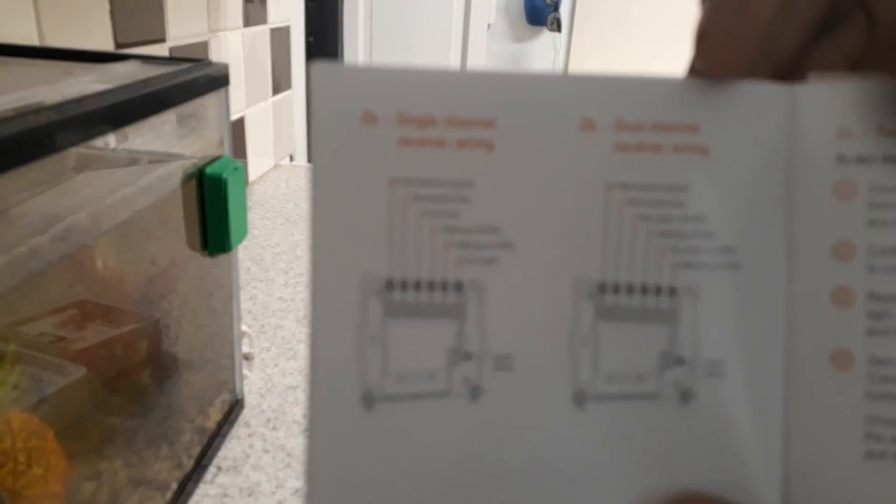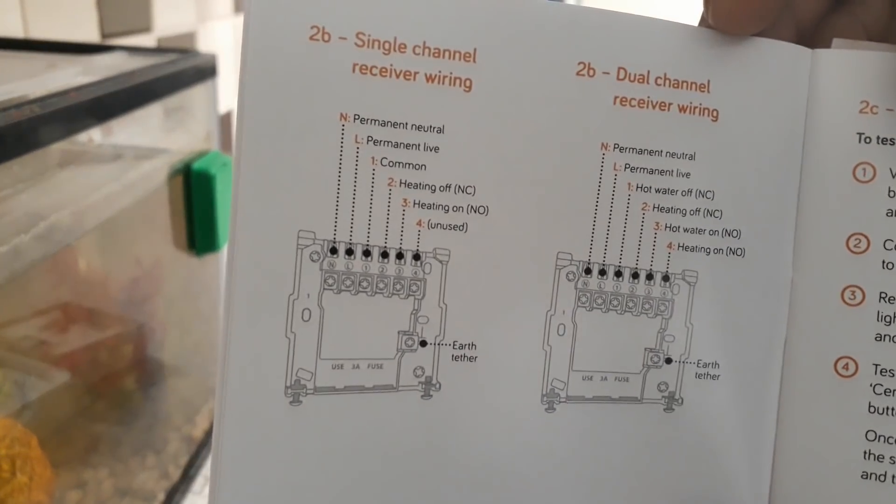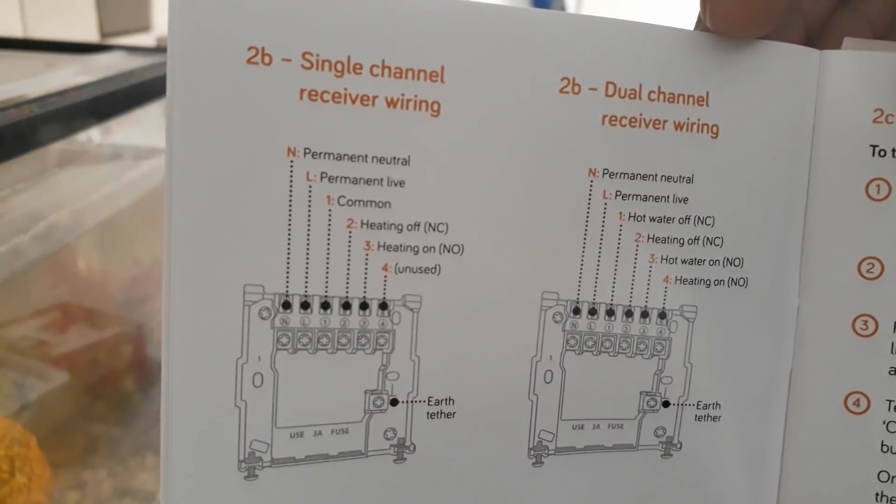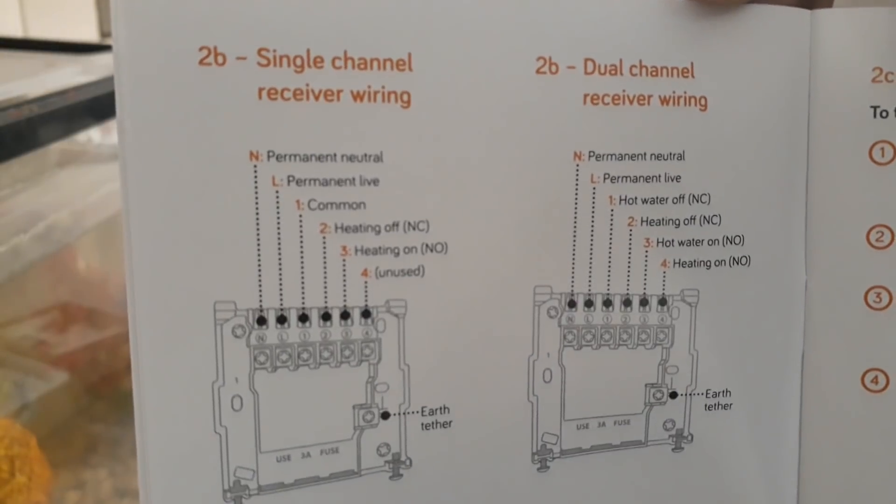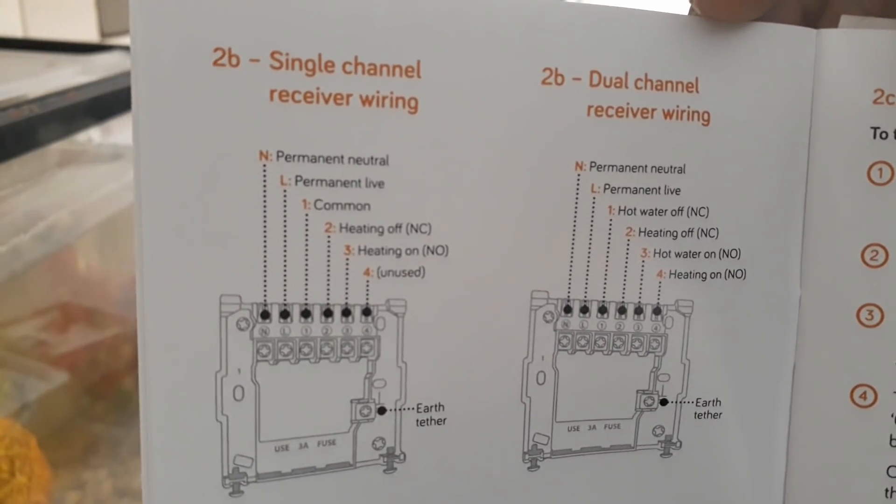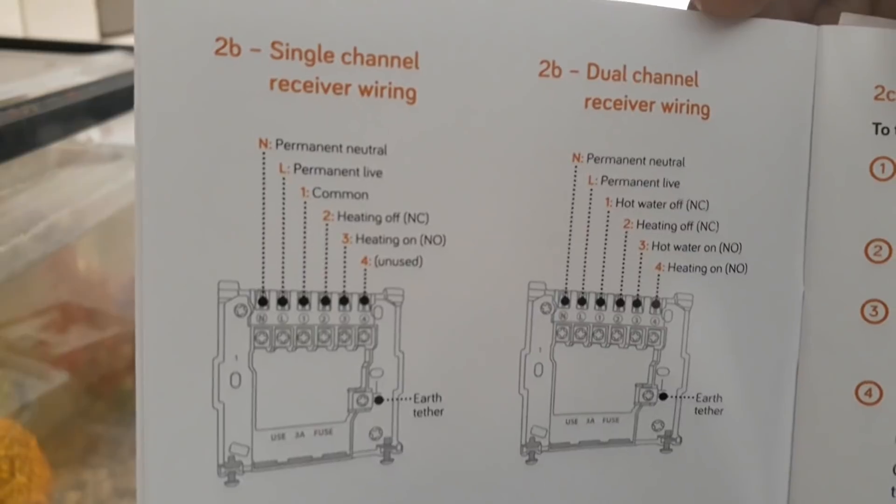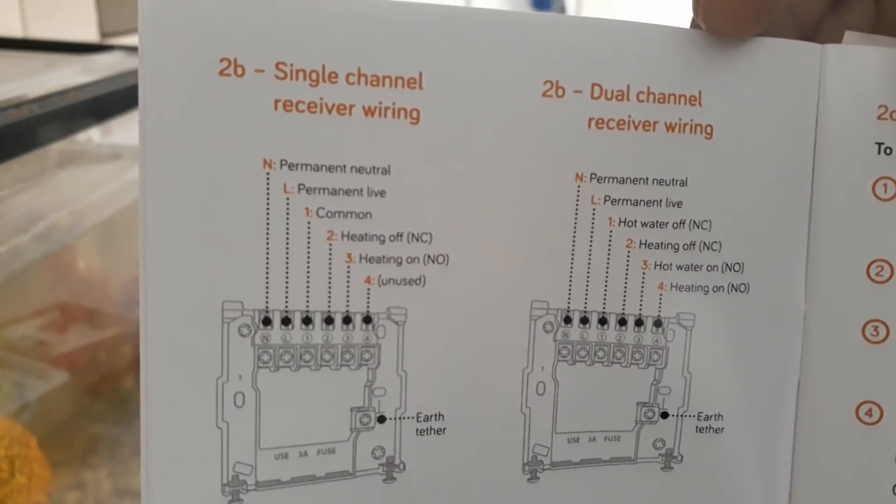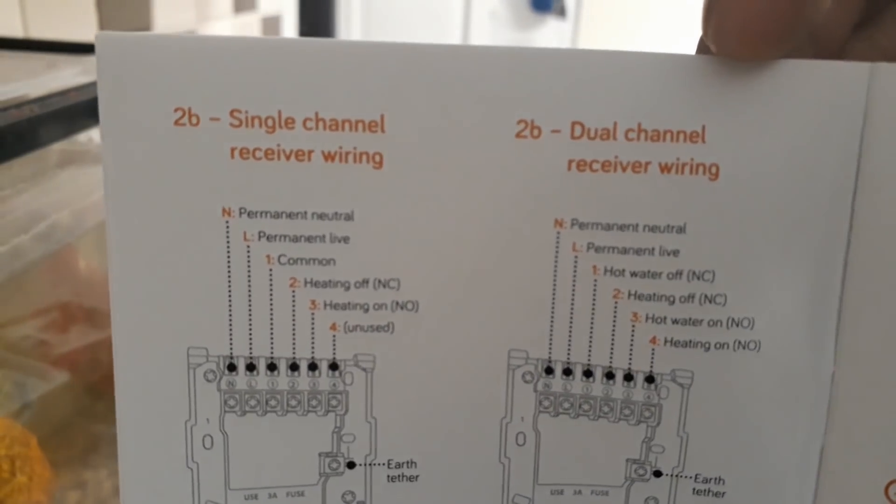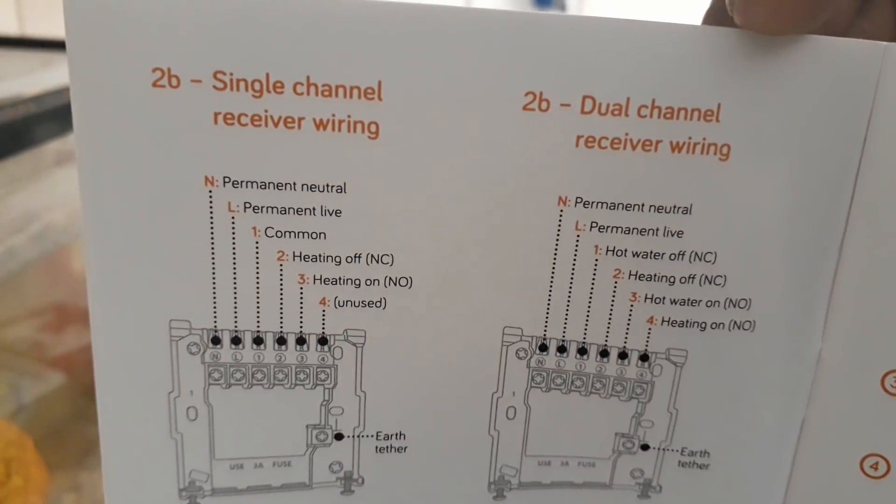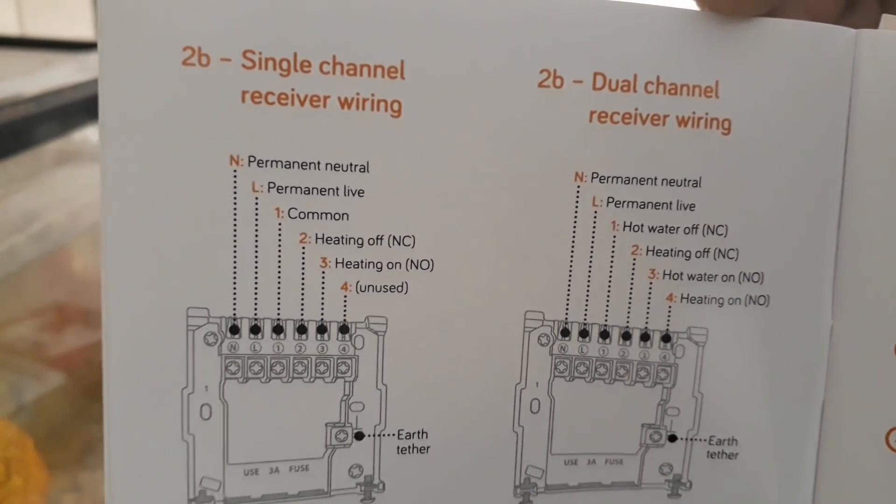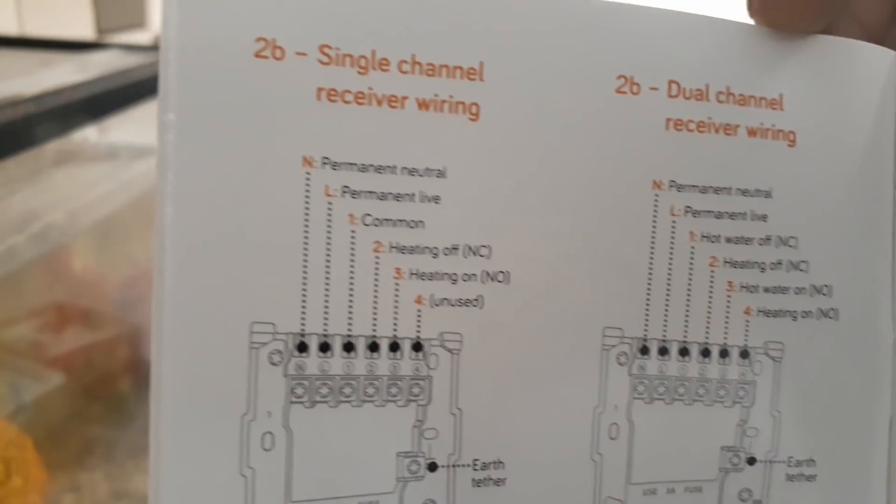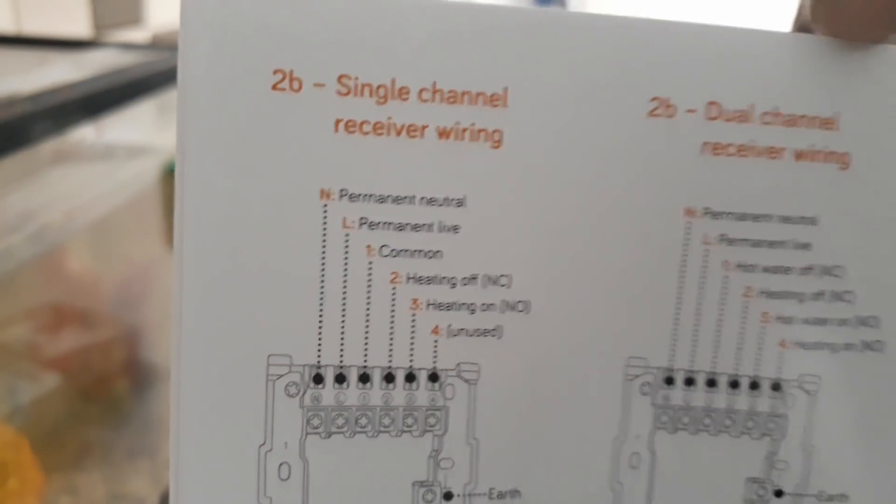I think I'm doing the single channel receiver wiring because I've only got four wires in mine. The dual channel looks fine, I'm sure my boiler can do it, but I just want it to turn on and off with Echo, so I think I'll get away with single channel.